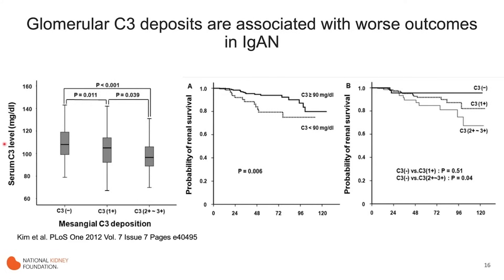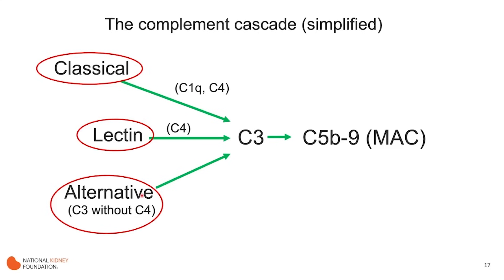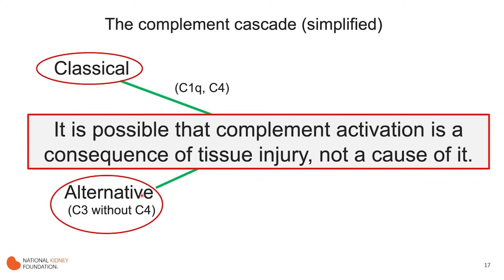A study looking at serum C3 levels showed that the lower the C3 level, the more C3 appears to be in the glomerulus, consistent with the idea that C3 levels are low because they're being consumed within the kidney. Both lower circulating C3 levels and greater deposition within the glomeruli are associated with worse kidney outcomes and lower probability of kidney survival. So it looks like we have classical, lectin, and probably alternative pathway activation across patients, though complement activation may still be a consequence rather than the cause of tissue injury.